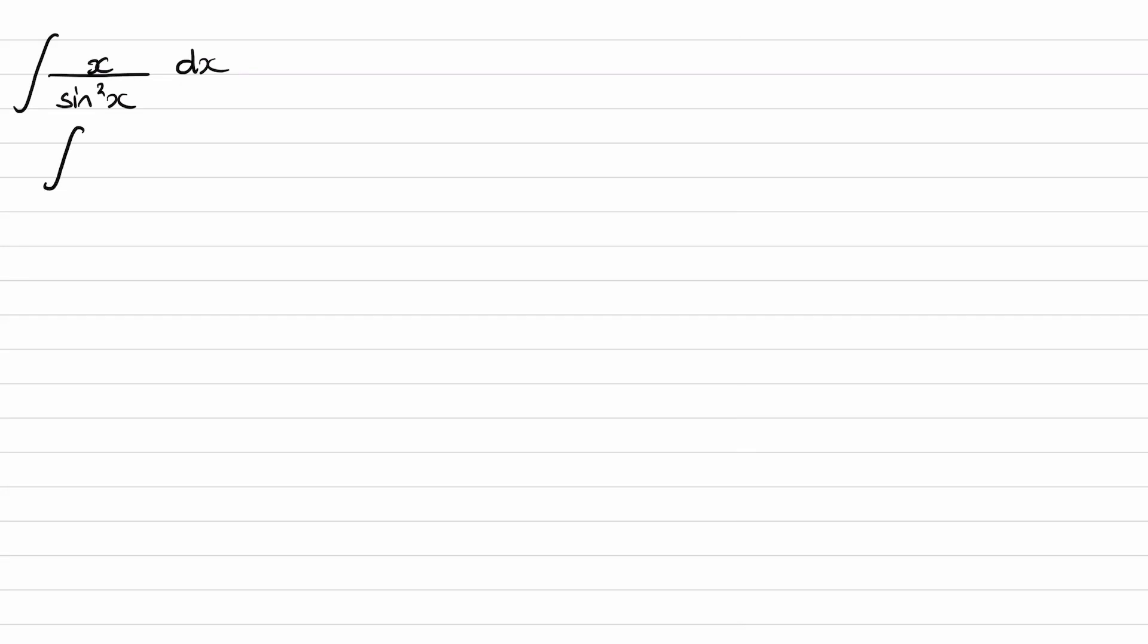We can start this question by rewriting this as x multiplied by cot squared x. So 1 over sin squared x is cot squared x, hence why we can write it like this.